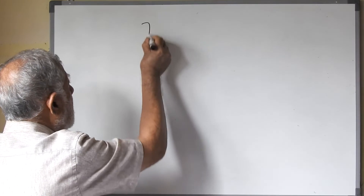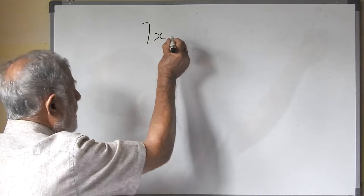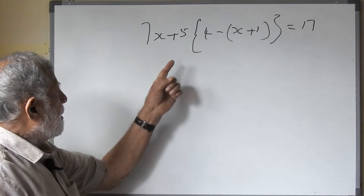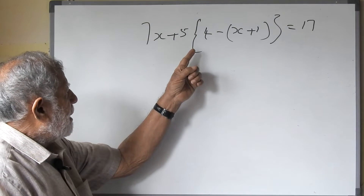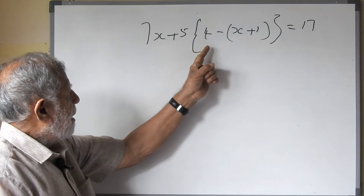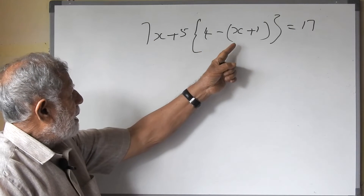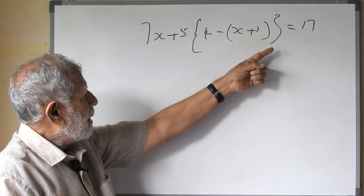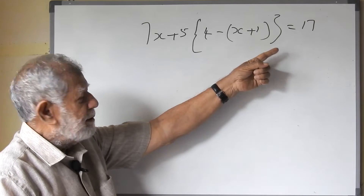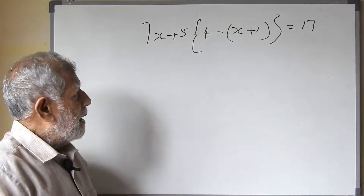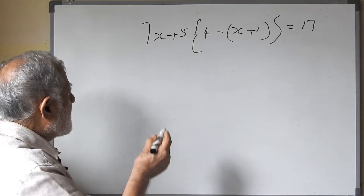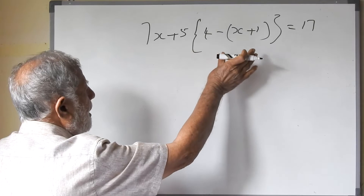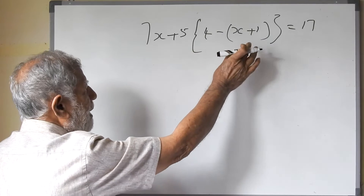We will look at this. So 7(x plus 5), big bracket, double bracket, 4 minus (x plus 1), double bracket close, equals 17. Now we start — first we have to remove the inside bracket.